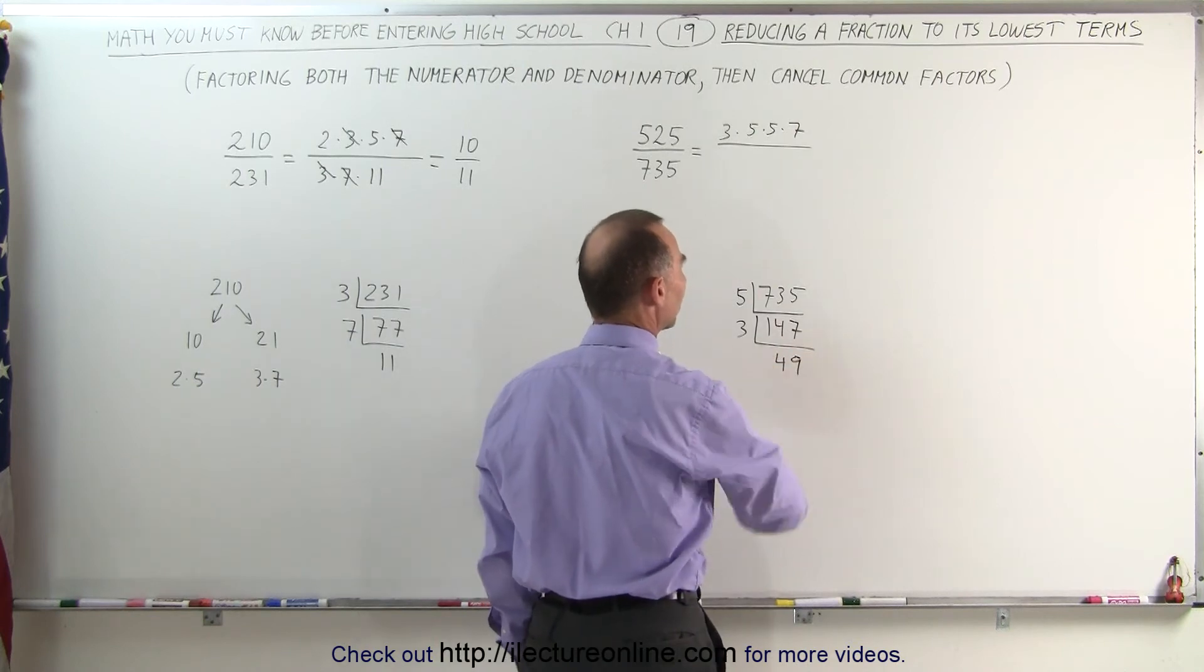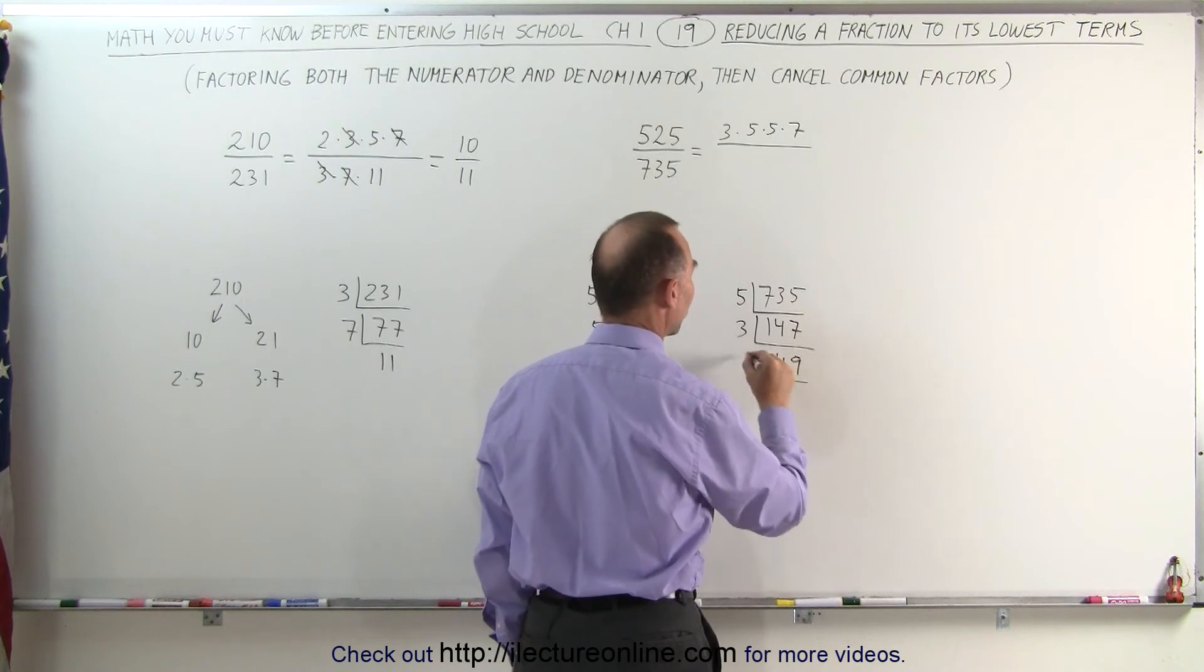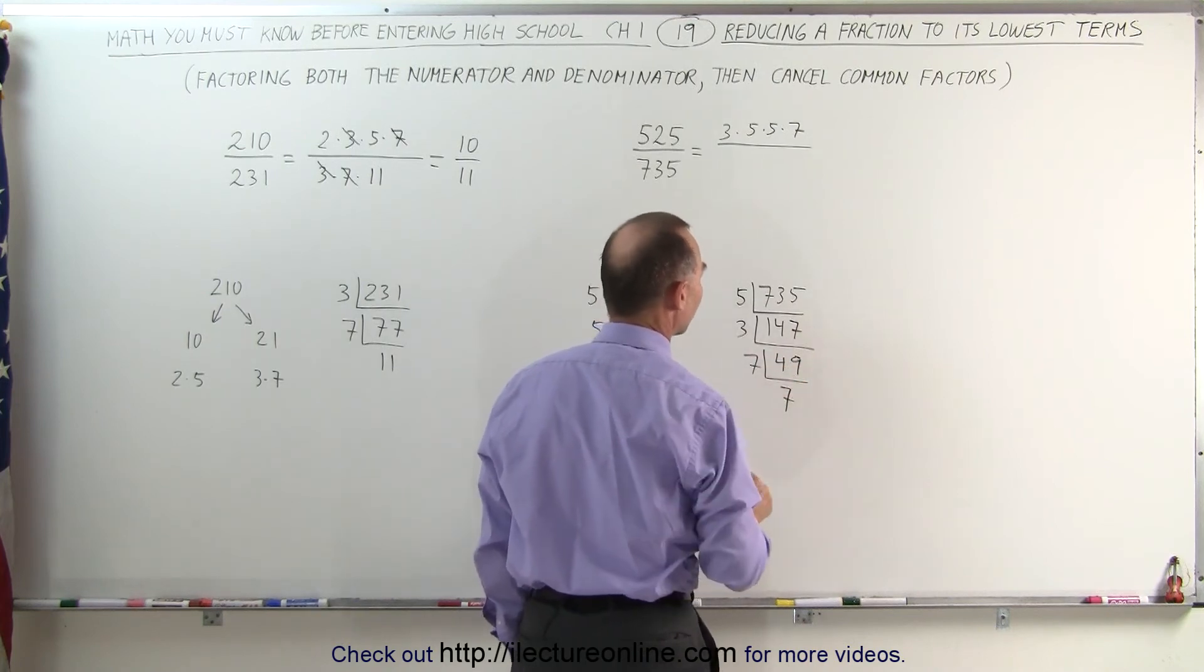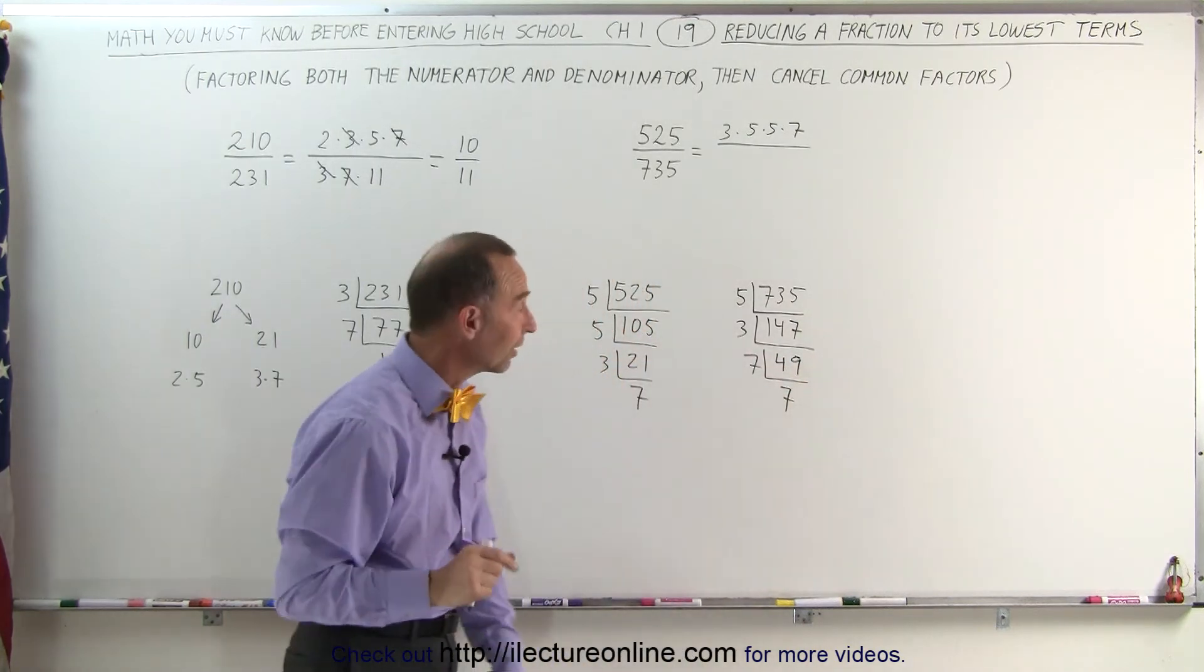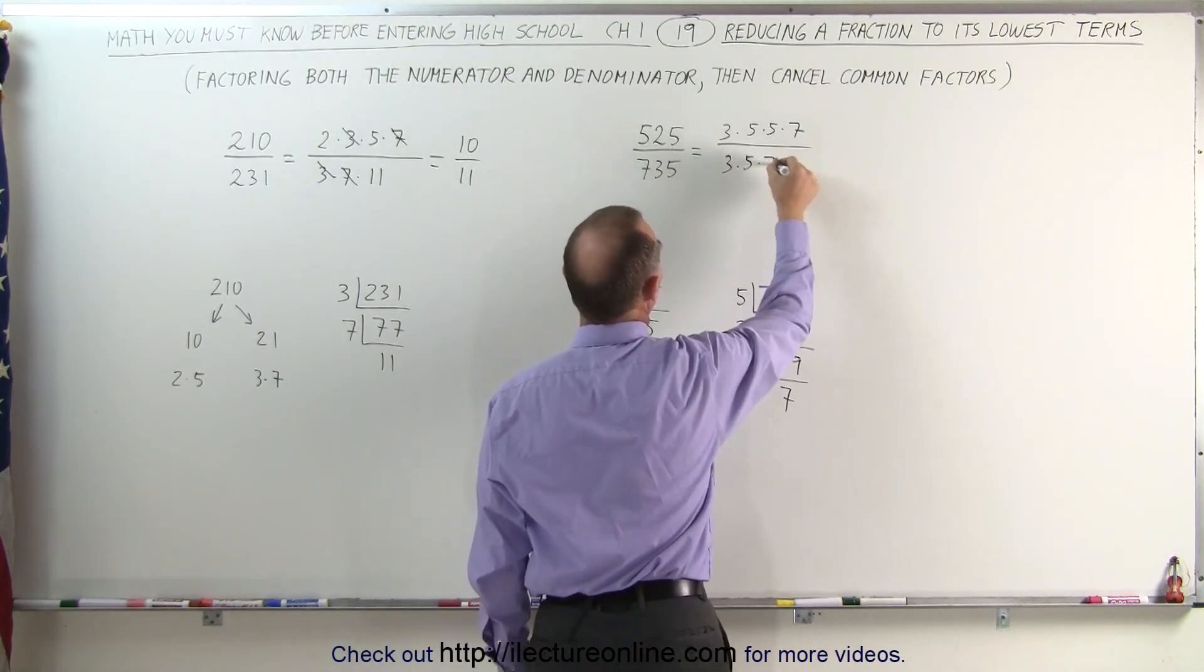49 times 3 is 147. Now 49 is 7 squared, so this can be divided by 7, and I end up with 7, which means the denominator can be written as the product of 3 times 5 times 7 times 7.